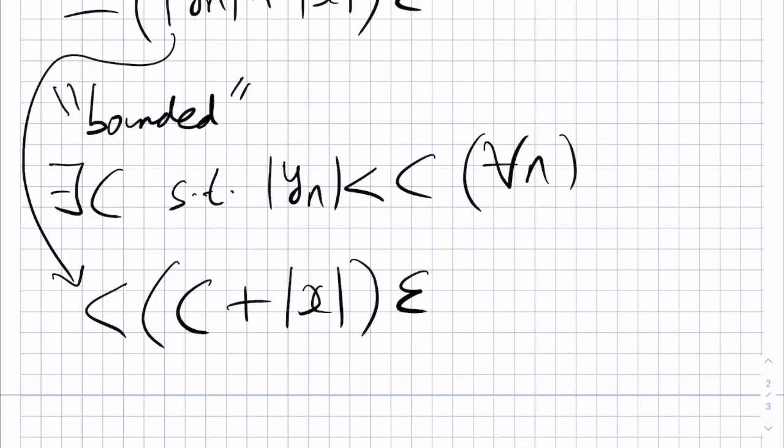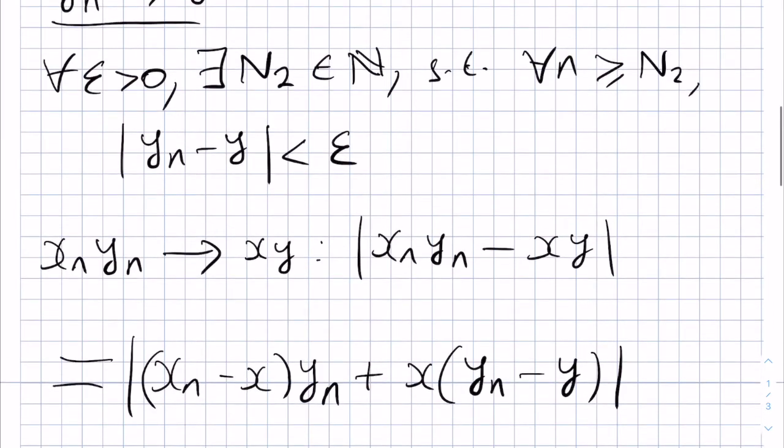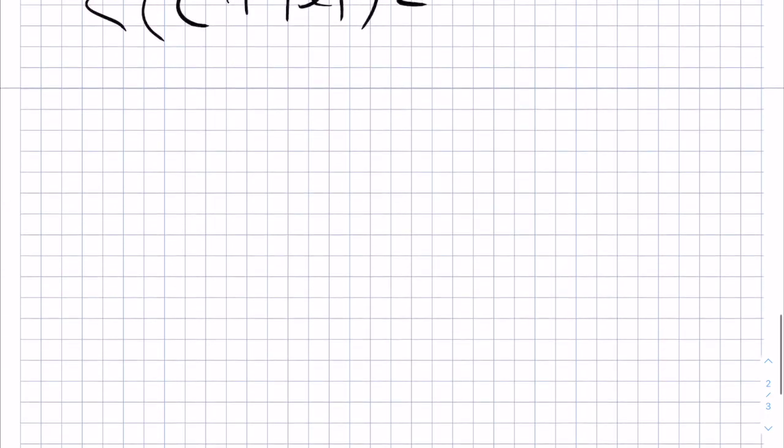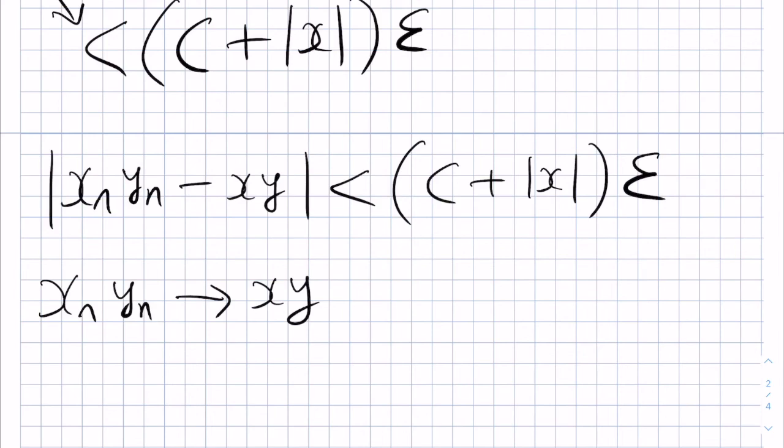Overall, if we chain the inequalities together right from the beginning, which was from here, we get that the modulus of Xn Yn minus XY is strictly less than some number C plus the modulus of X multiplied by epsilon. And since this is a constant multiple of epsilon, we have indeed shown that Xn Yn tends to XY, or rather converges to XY as its limit. And hence, we have proven our earlier statement.